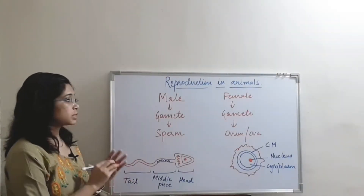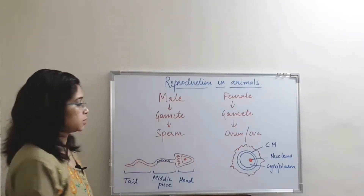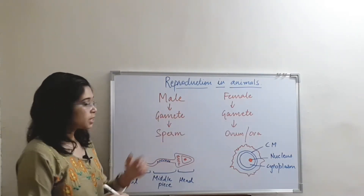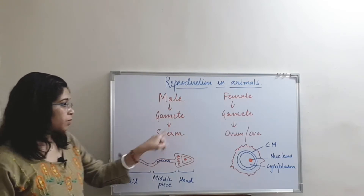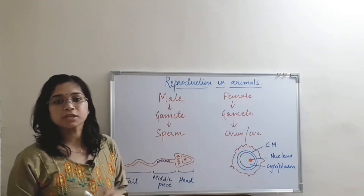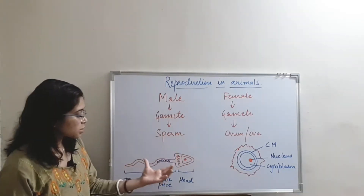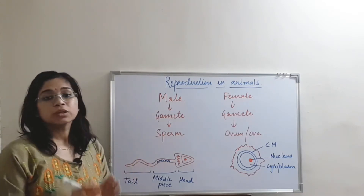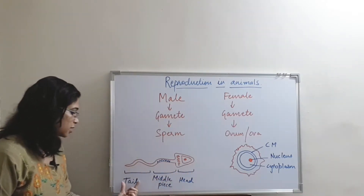This flowchart shows the step-by-step process of sexual reproduction. First of all, the male and female gametes are produced. The male gamete is sperm and the female gamete is ovum. The singular term is ovum and the plural term is ova. Let's see the structure of each. This is a male gamete, that is sperm.